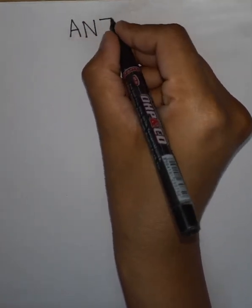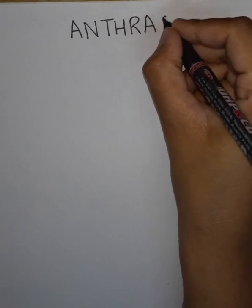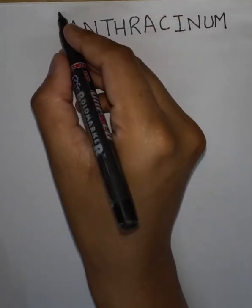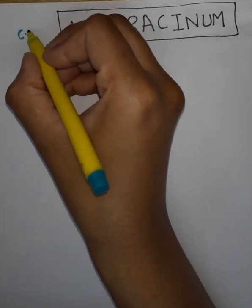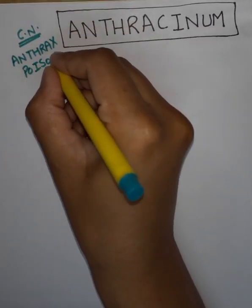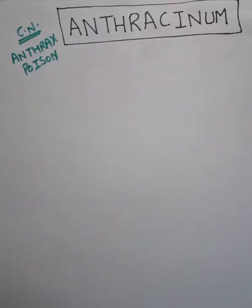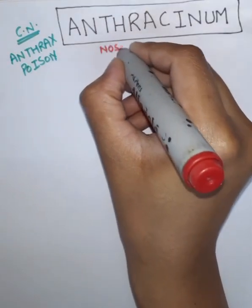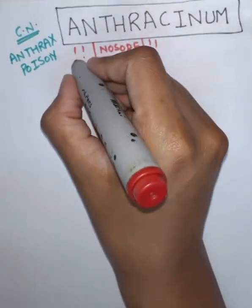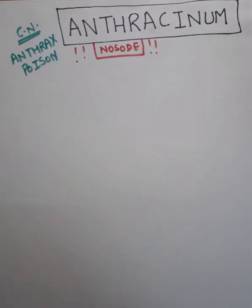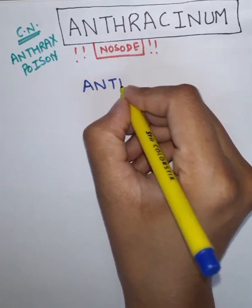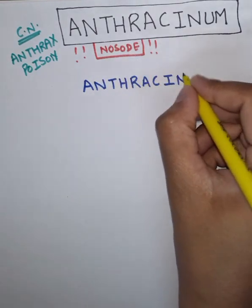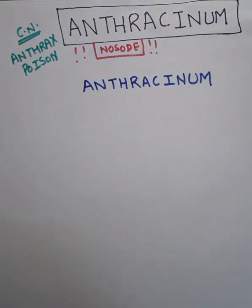Our medicine for today is Anthracenum. The common name is anthrax poison and it is a nosode, so we have to be careful regarding the dosage. The mnemonic for Anthracenum is ANTHRACENUM itself, which makes things a little bit easier.